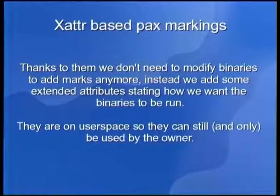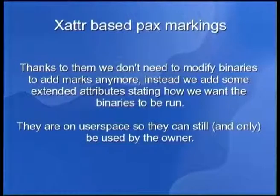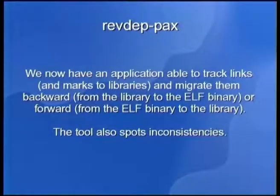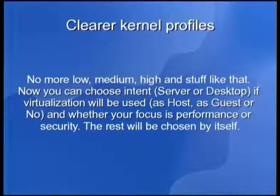Now what we did last year: we have extended attributes for PaX marks. When you want to tell a process it needs mprotect disabled, until now you had to modify the executable. Now you can put an extended attribute on the executable. These are user PaX markings, meaning the owner of the process can modify the PaX mark. We also have repdevpax — if you mark a library as requiring mprotect disabled, repdevpax will detect everything that links against that library and fix the PaX markings, so every process linking with that library will be able to write and execute.